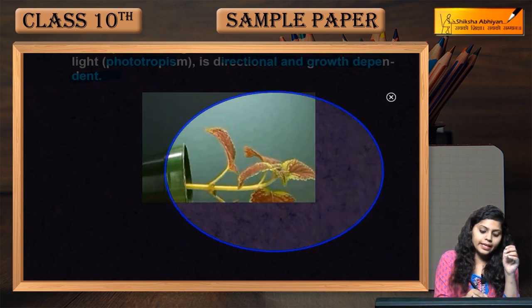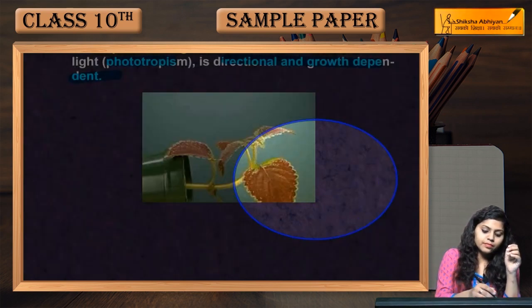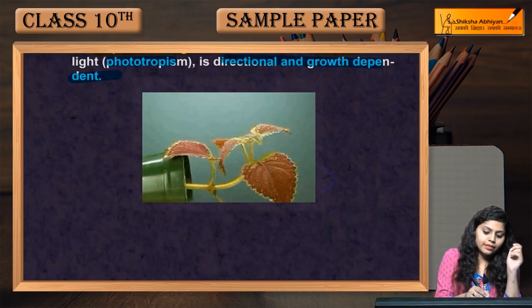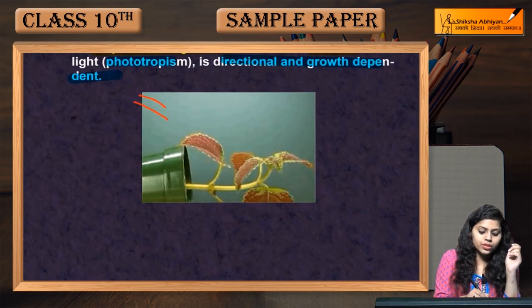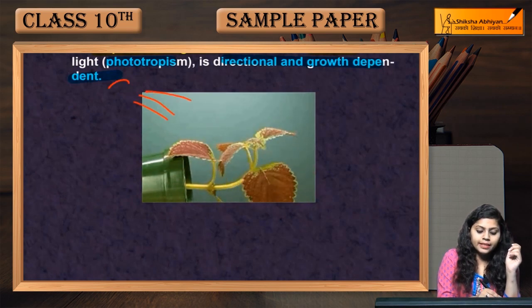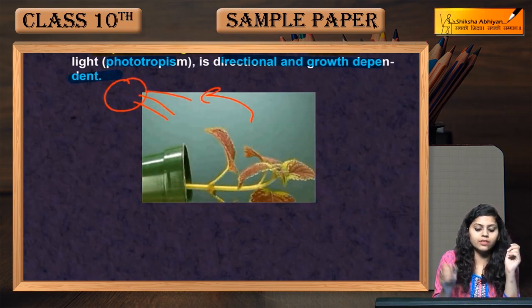The movement of shoots is determined by light. If light comes from one direction, then the movement will be in that direction.